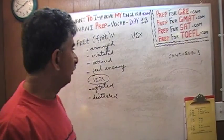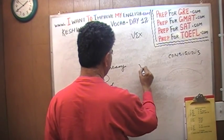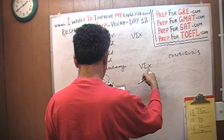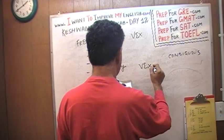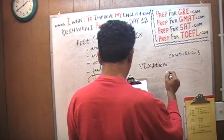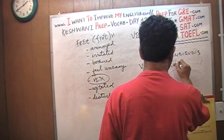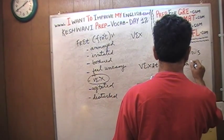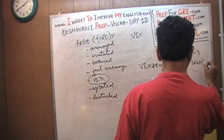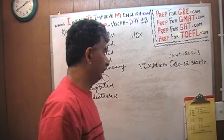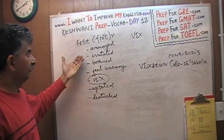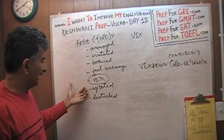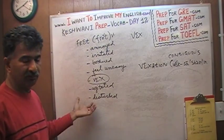The noun of wax — let's put it up here — the noun would be 'vexation.' Vexation simply means an annoyance, an irritation, a bother, an uneasiness, agitation, a disturbance. Something that causes agitation, something that causes uneasiness.